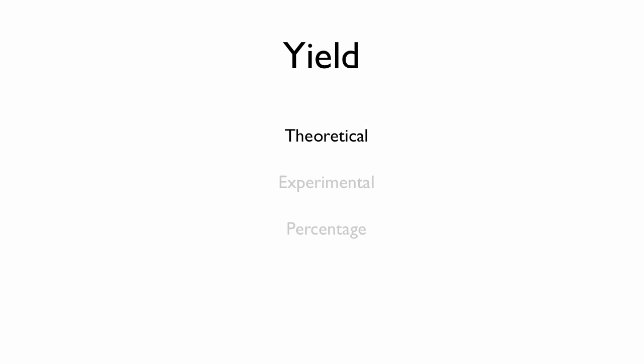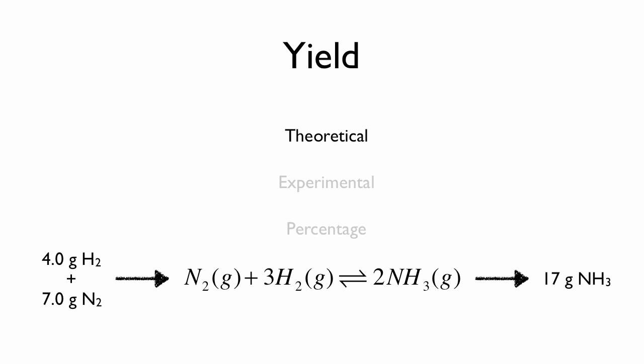There are 3 kinds of yield. The first one is theoretical, and we calculate it just like we did in our example problem. If we had 4 grams of hydrogen gas and 7 grams of nitrogen gas, and we combined them in the Haber process, we'll get 17 grams of ammonia. This would be a theoretical yield, the maximum amount we could get if everything went perfect. In real life, nothing ever quite works so perfectly, and we end up getting something less. This is an experimental yield, an actual real-life value. Percentage yield combines the first two. If we take the experimental yield and divide by the theoretical yield, we'll get a percentage yield.